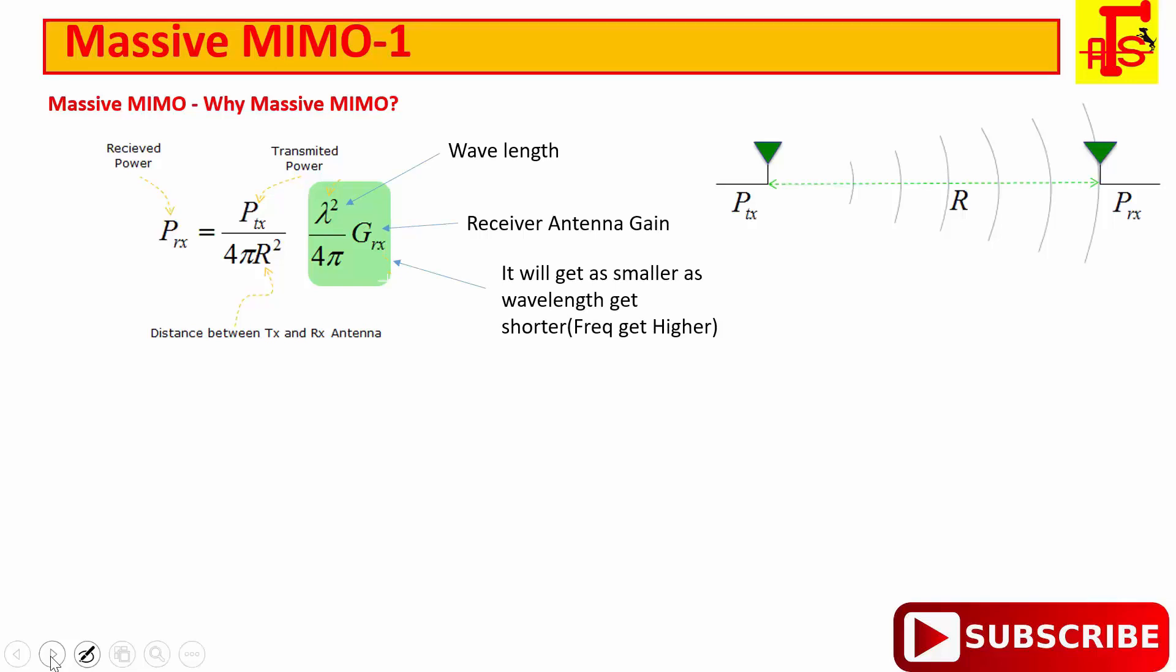I have told affected by frequency means if frequency increase, their wavelength will decrease. If wavelength will decrease, the received signal power will decrease. So received signal power will be affected by frequency and receive antenna gain. The mathematical formula is PTX / (4πR²) × λ² / 4π × GRX. We can see here received power is proportional to the square of the wavelength.